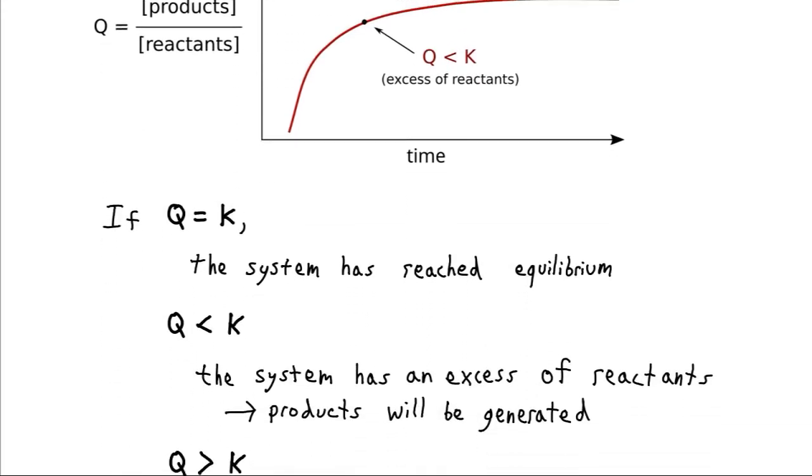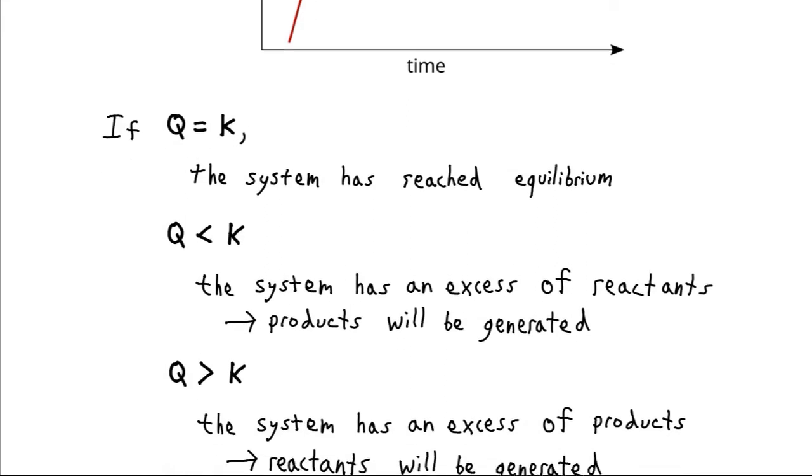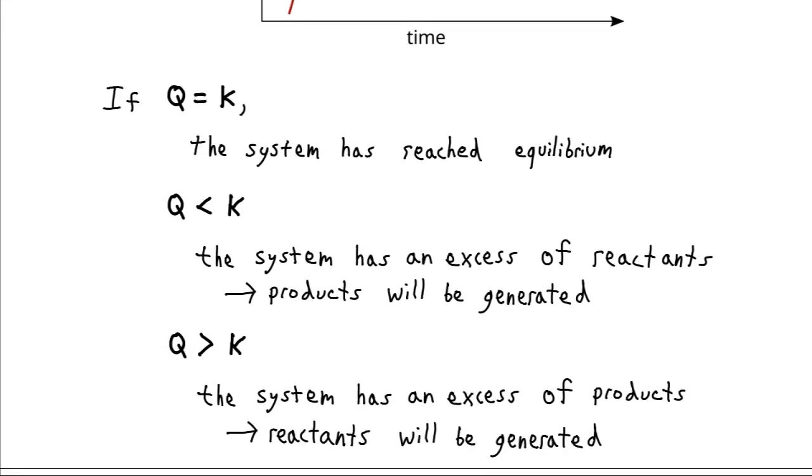So if Q equals K, we're at equilibrium. If Q is less than K, we're going to need to generate products, and so the right side of the reaction is favored. And lastly, if Q is greater than K, we're going to need to generate more reactants, and so the left side of the reaction is favored.